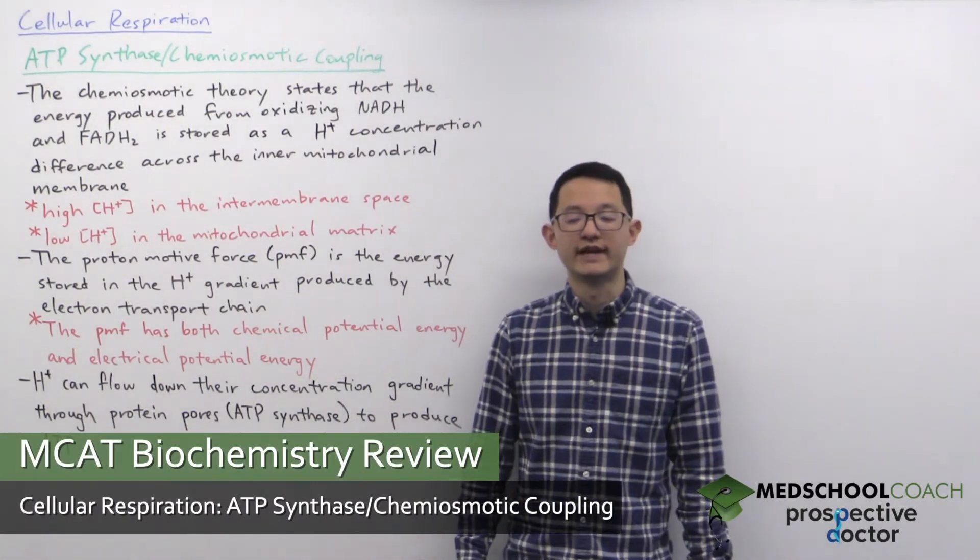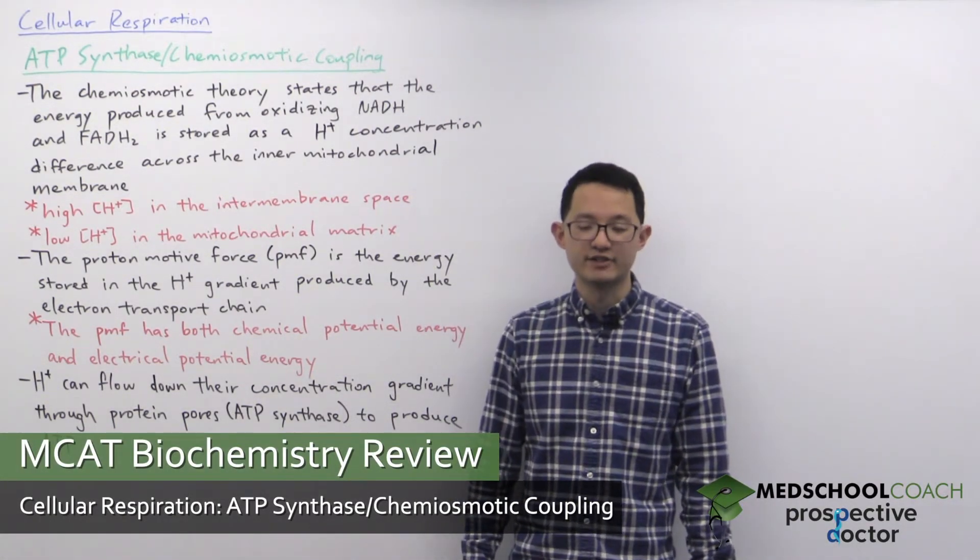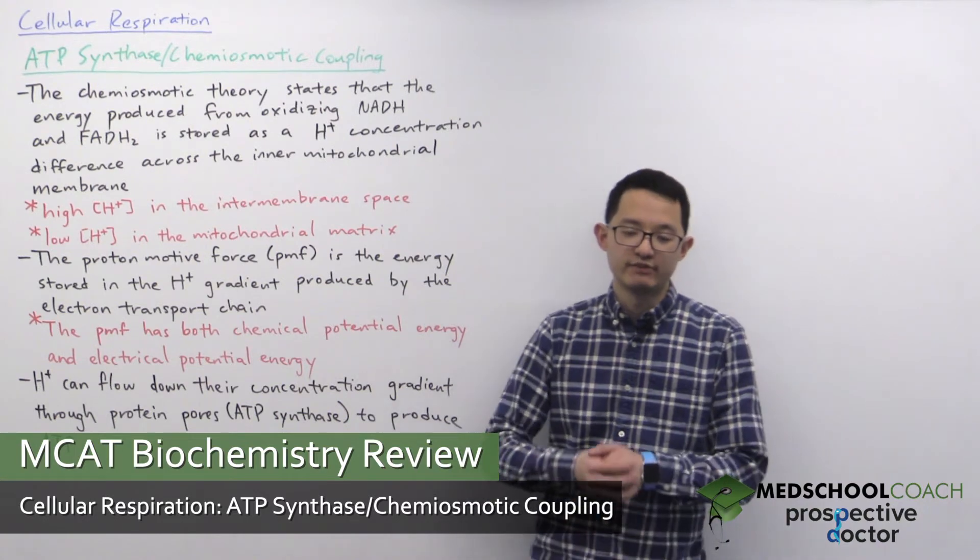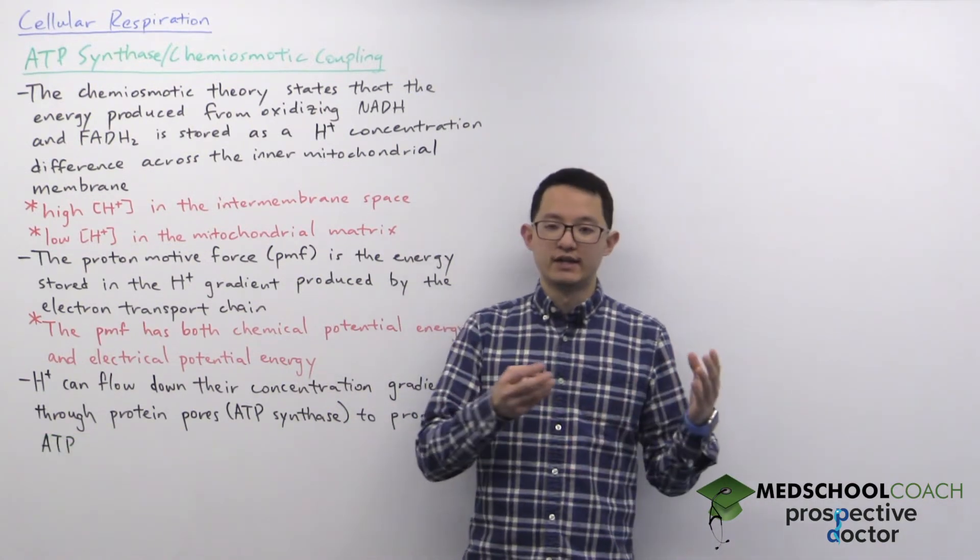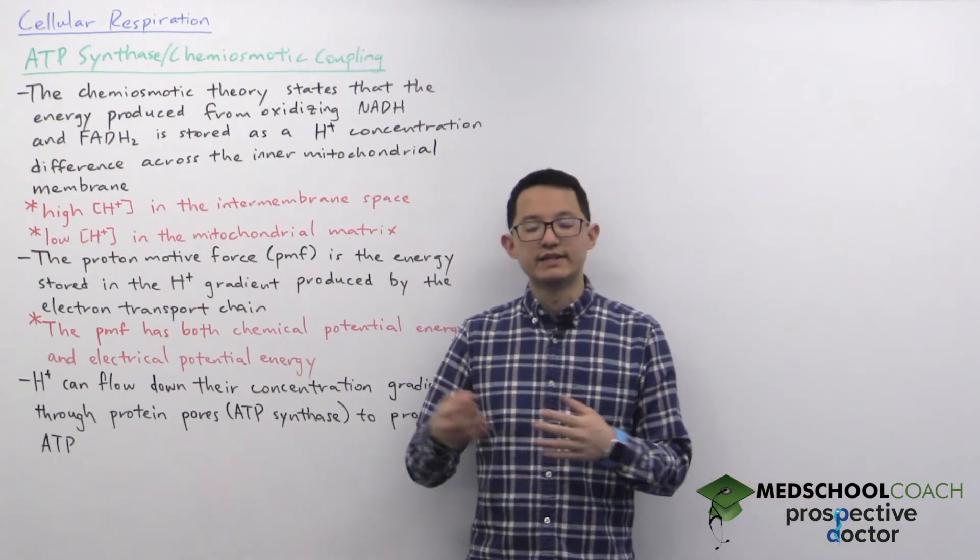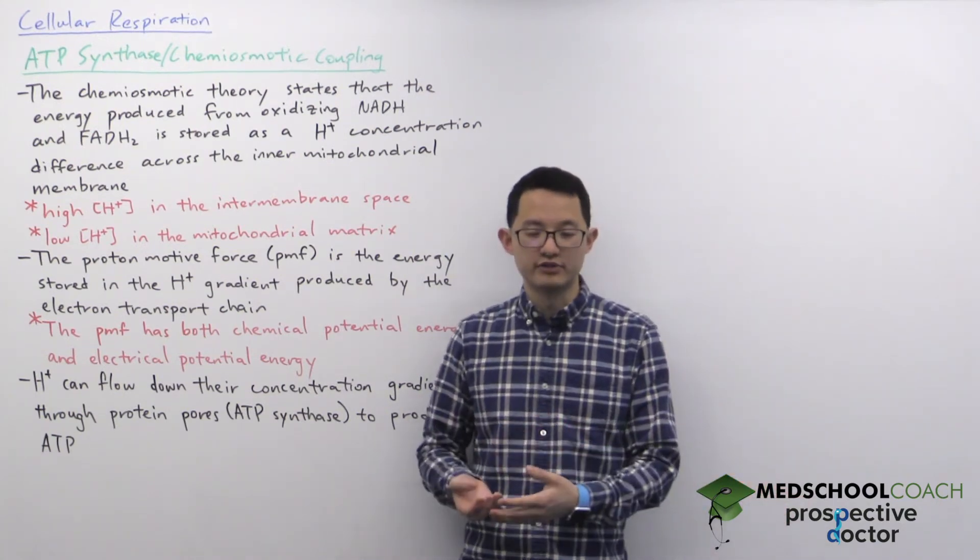In this video we're going to go over ATP synthase and chemiosmotic coupling. As we discussed, oxidative phosphorylation is the process by which the oxidation of NADH and FADH2 is used to produce ATP.